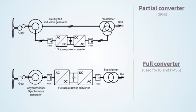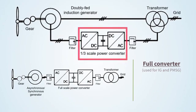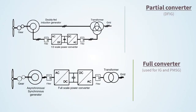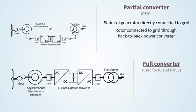Here you can see the electrical structures of the most frequently used wind converter topologies. The partial converter or DFIG, doubly fed induction generator, where the stator of the generator is directly connected to the grid and the rotor is connected to the grid through a back-to-back power converter.